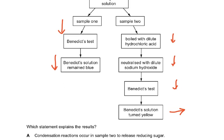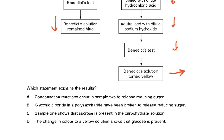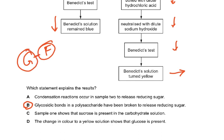The answer is B: glycosidic bonds in a polysaccharide have been broken to release reducing sugars. Option A said a condensation reaction occurs — that is wrong; breaking the bond between glucose and fructose is a hydrolysis reaction, not condensation. When HCl is added, the glycosidic bond in the sucrose molecule breaks, releasing glucose and fructose, which are now reducing sugars.